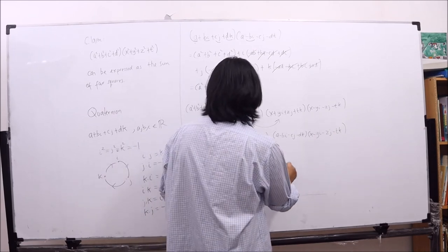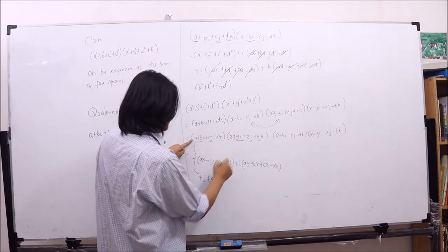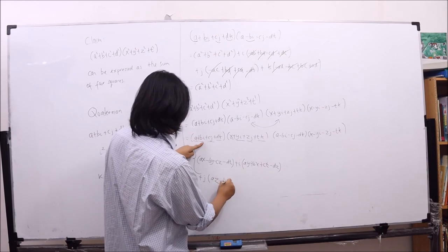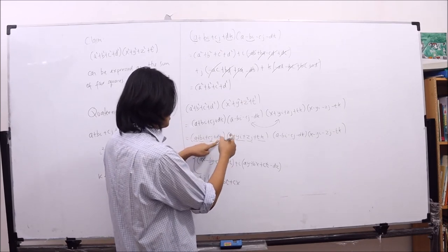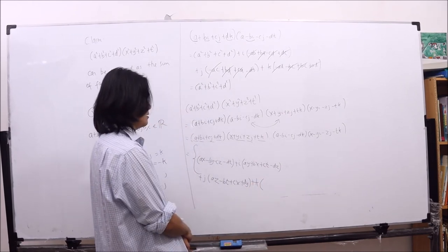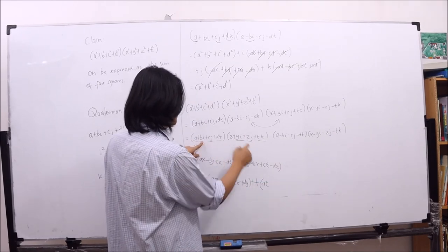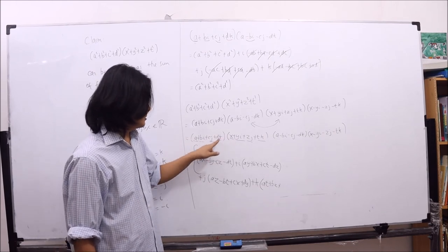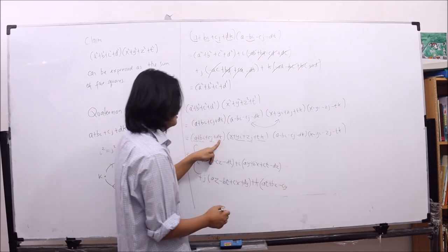Continuing to collect terms with j: we have az, then ik gives -bt, and cx from another combination, plus dy. For the terms with k: we have at, then bz, and from ji (which is -k) we get minus cy, and dx.